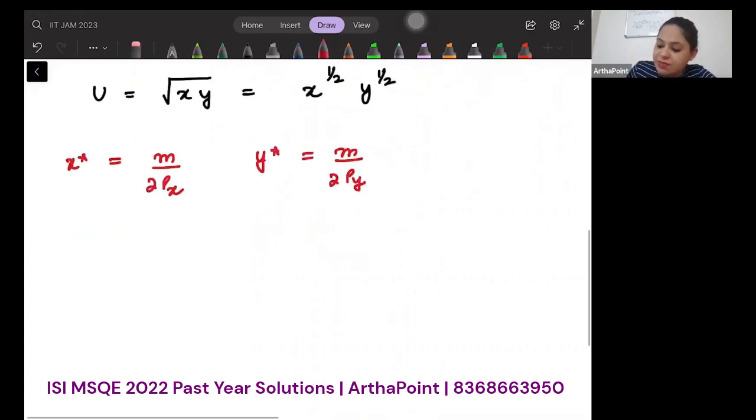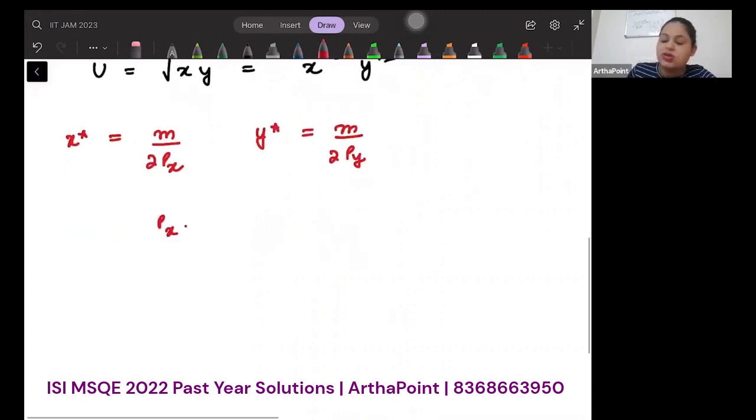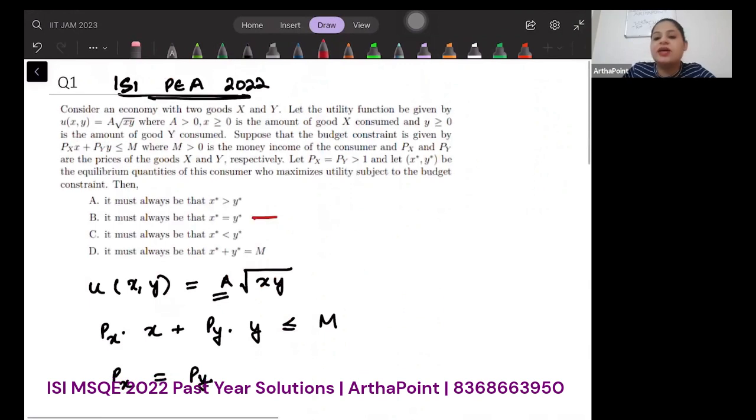And if px and py are equal to each other, say let's equal to p, then I will just get my x* as m/(2p) and y* also as m/(2p). So x* and y* will be equal to each other. So it will be the case that x* and y* are in fact equal to each other.